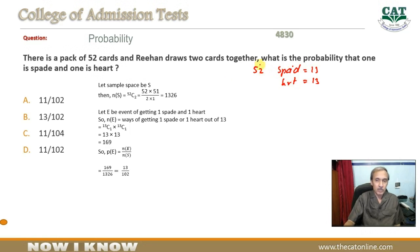Aur is mein se total jo tadad hai 52 hai aur in mein se do card choose karne hain randomly. Probability maloom karni hai ke un mein se ek spade aaye aur ek heart ka.